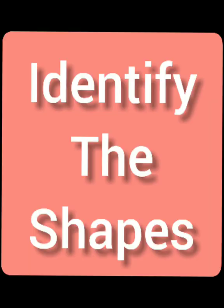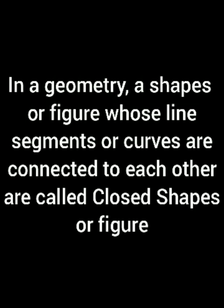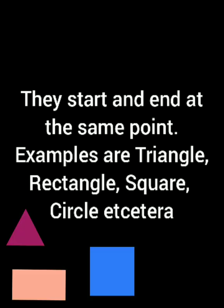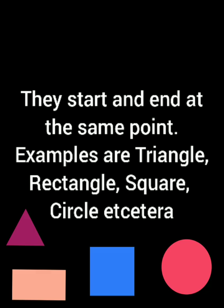In geometry, a shape or figure whose line segments or curves are connected to each other is called a closed shape or figure. They start and end at the same point. The examples of closed shapes are triangles, rectangles, squares, circles, etc.